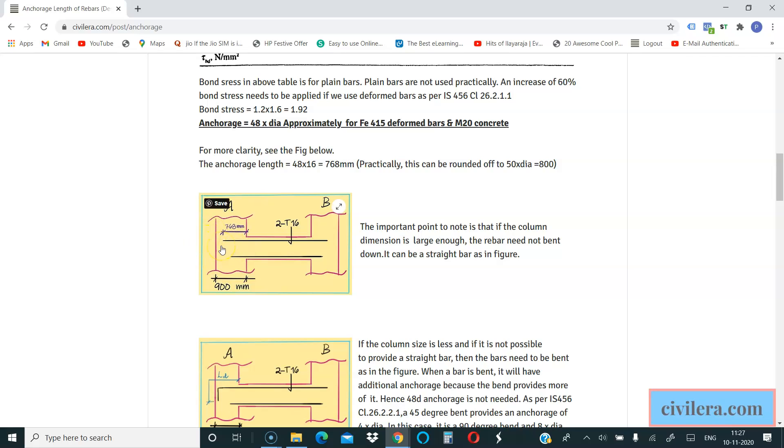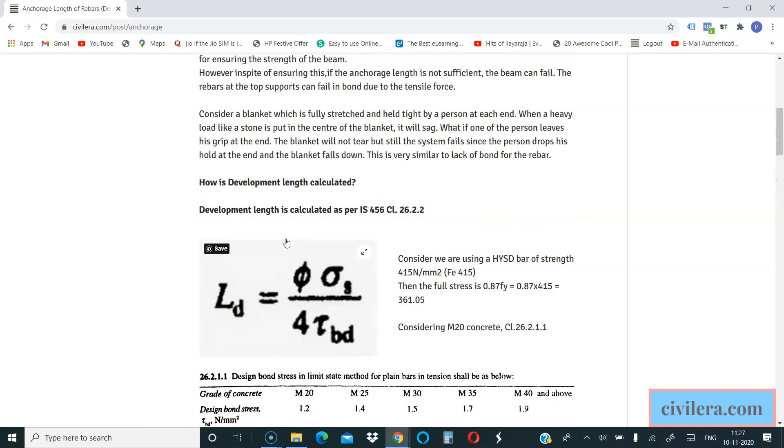And that tension can pull out your bars. So to ensure that it doesn't fail in that bond, we ensure that there is sufficient anchorage. It's like, as I mentioned here, consider a blanket which is fully stretched and held tied by a person at each end, and then assume that you put a load on the blanket and if one of the guys releases his hand, what happens? The blanket will come out of his hand.